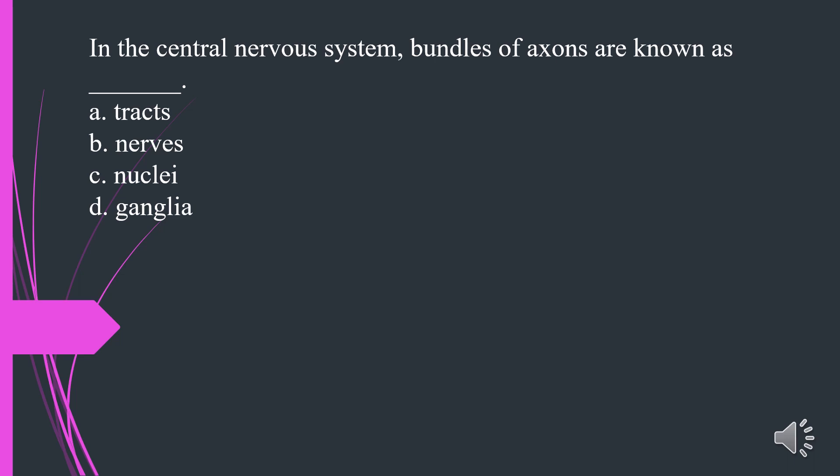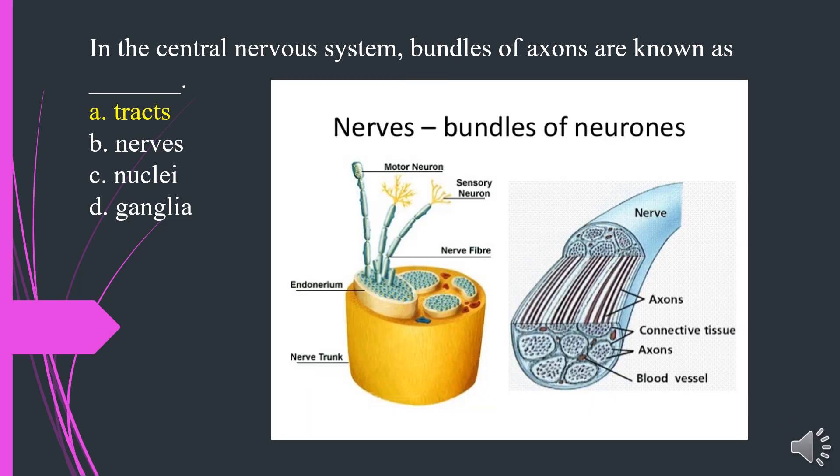In the central nervous system, bundles of axons are known as? A. Tracks. B. Nerves. C. Nuclei. D. Ganglia. The answer is A. Tracks.